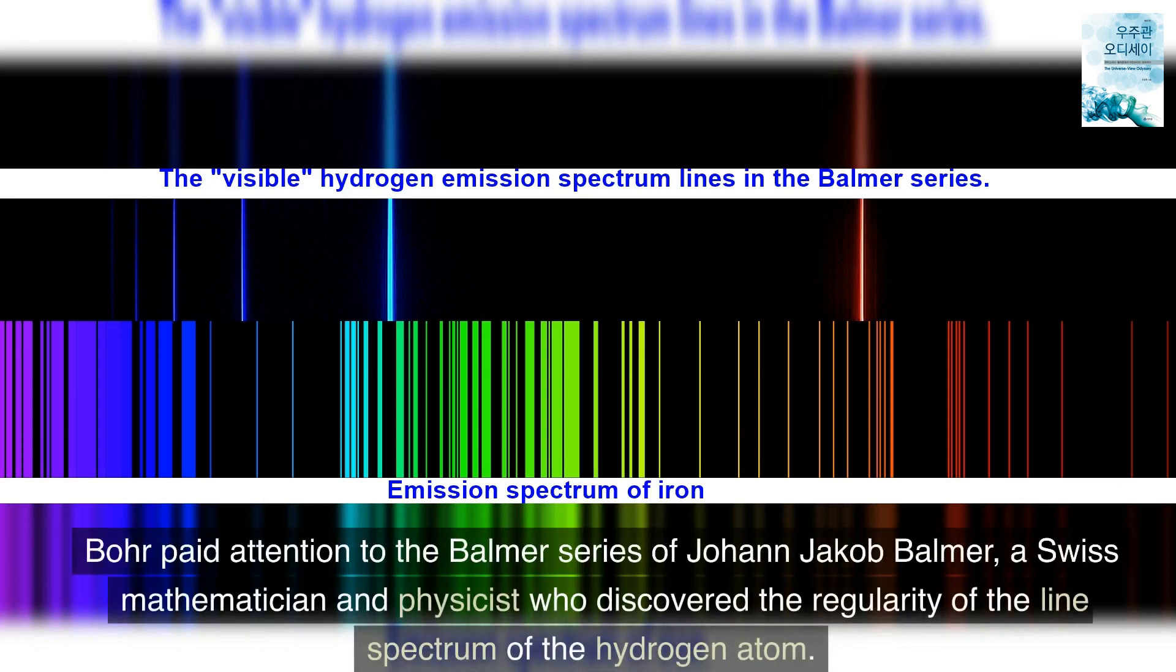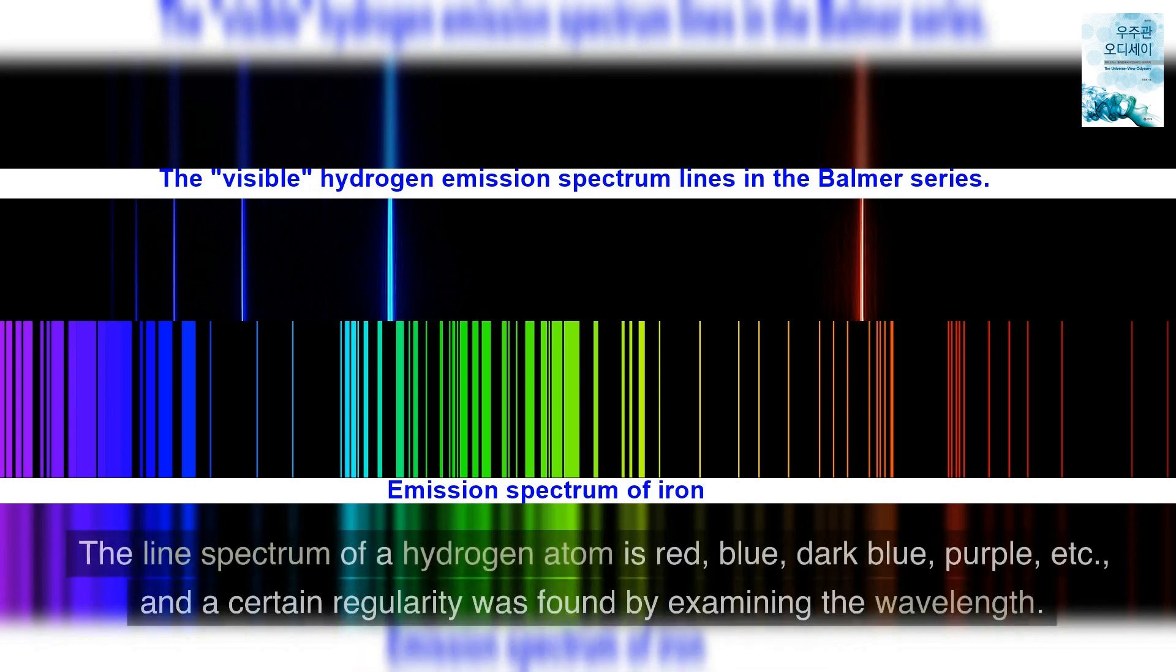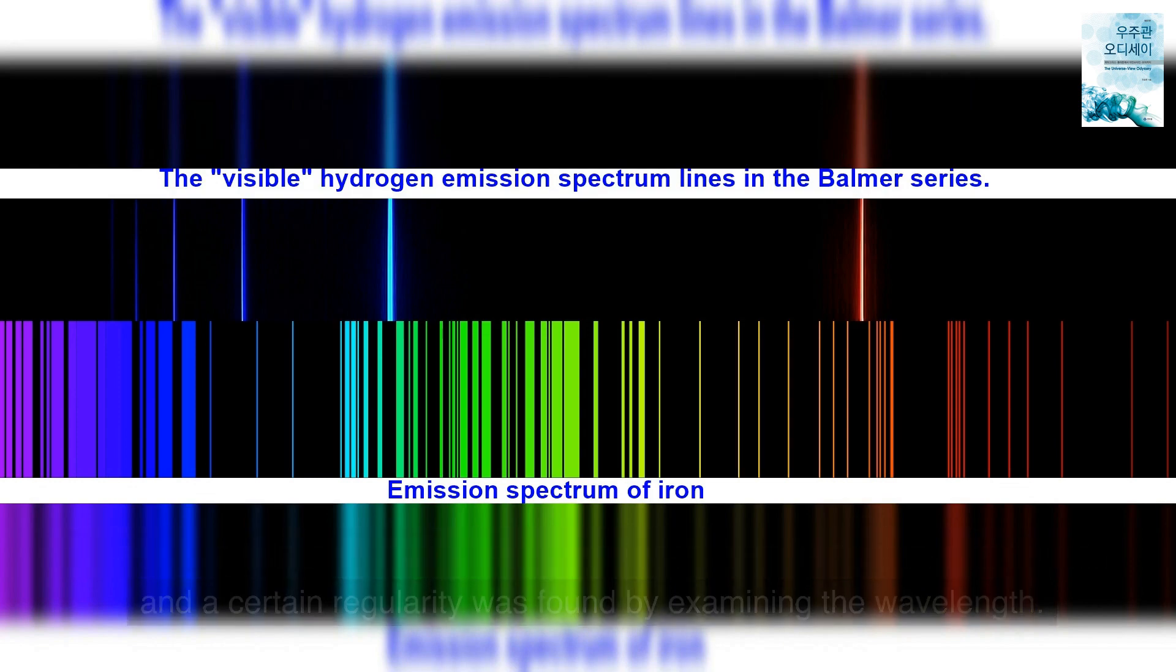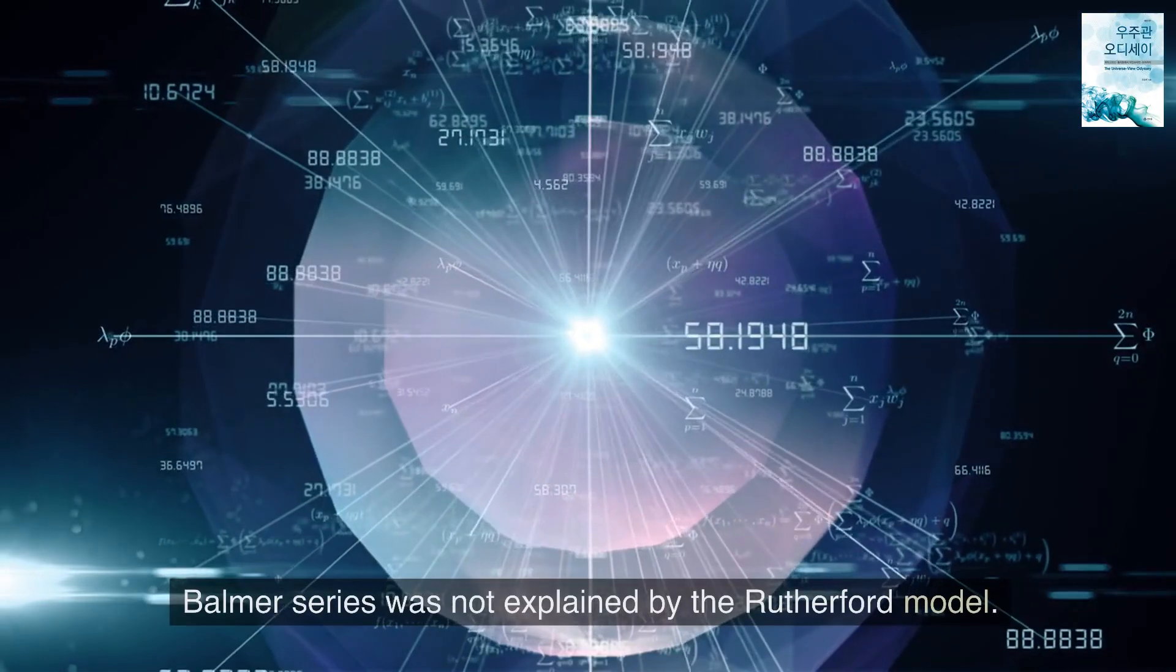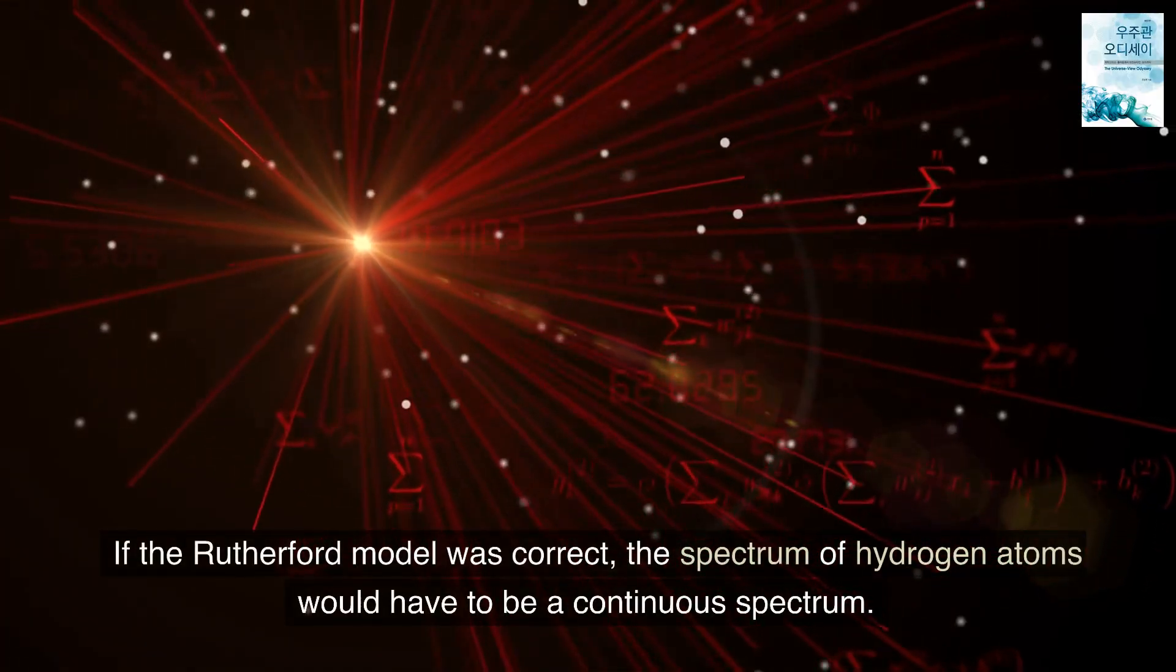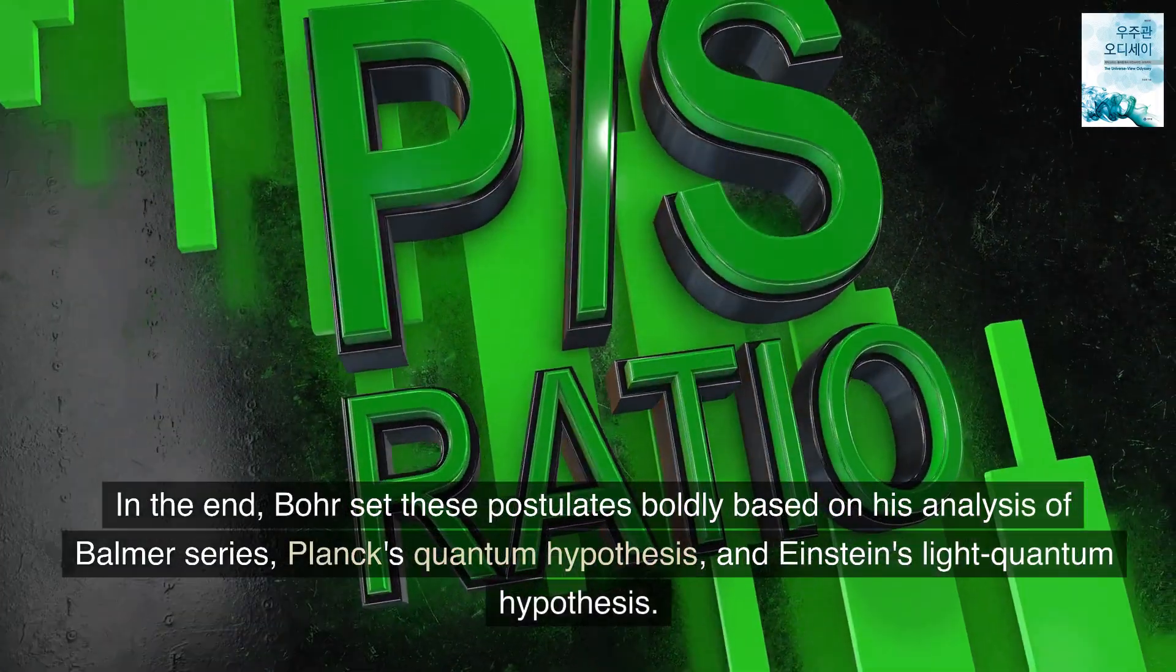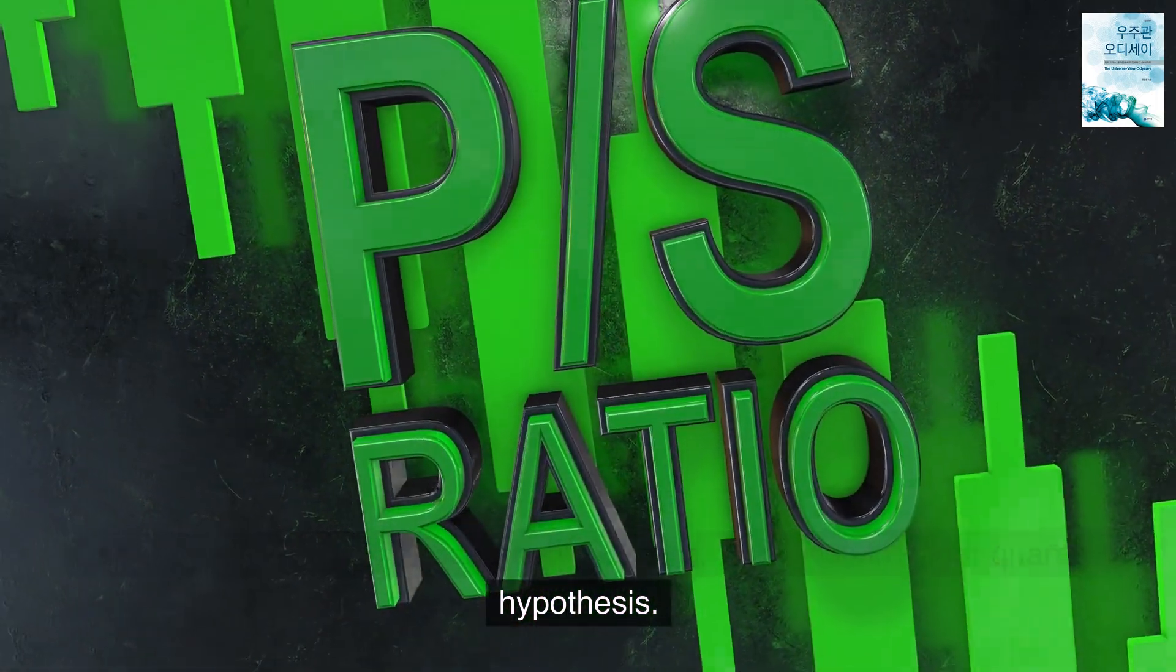Bohr paid attention to the Balmer series of Johann Jacob Balmer, a Swiss mathematician and physicist who discovered the regularity of the line spectrum of the hydrogen atom. The line spectrum of the hydrogen atom is red, blue, dark blue, purple, etc. And a certain regularity was found by examining the wavelength. In other words, the ratio of these wavelengths showed a deep relationship with integer. Balmer series was not explained by the Rutherford model. If the Rutherford model was correct, the spectrum of hydrogen atoms would have to be a continuous spectrum. In the end, Bohr set these postulates boldly based on his analysis of Balmer series, Planck's quantum hypothesis, and Einstein's light quantum hypothesis.